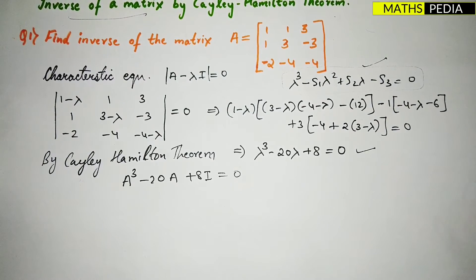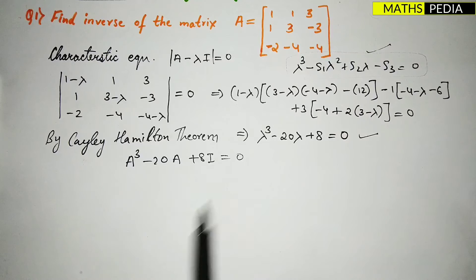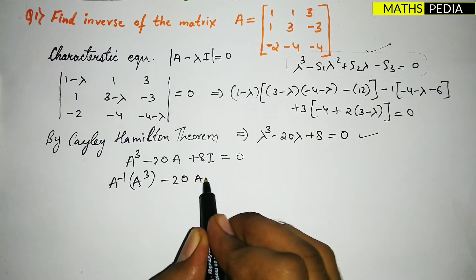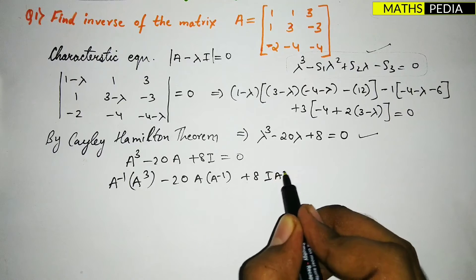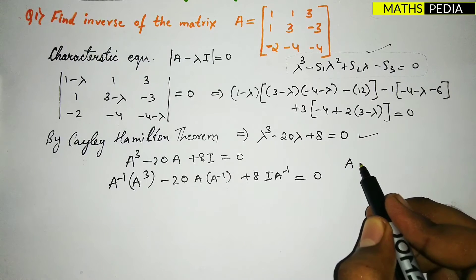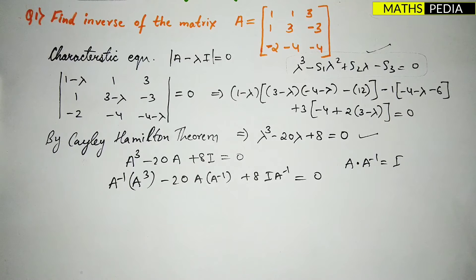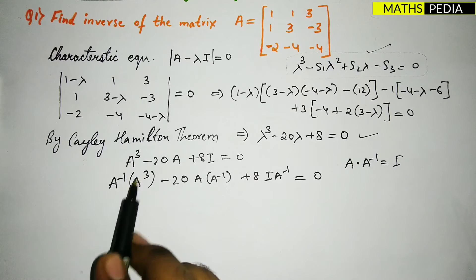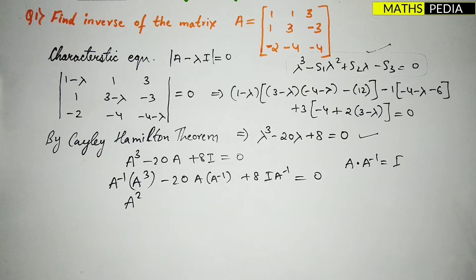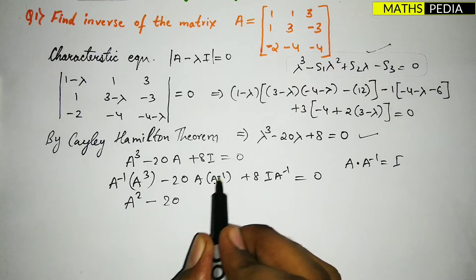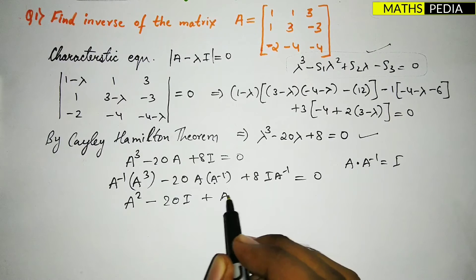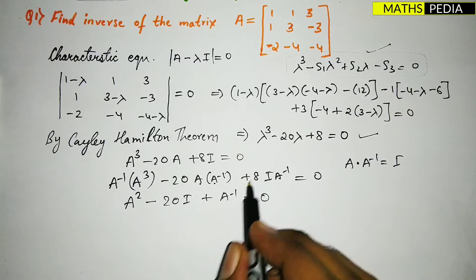To find A⁻¹, multiply the entire equation by A⁻¹: A⁻¹·A³ - 20·A·A⁻¹ + 8I·A⁻¹ = 0. Using the property A·A⁻¹ = I, we get: A² - 20I + 8A⁻¹ = 0.